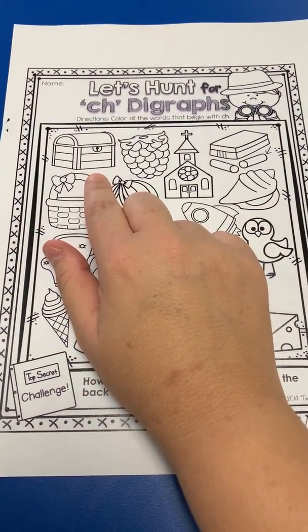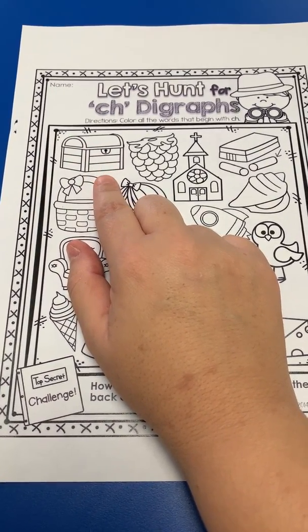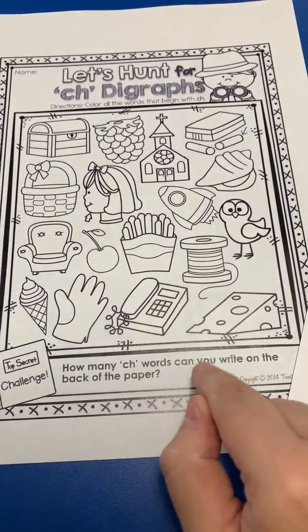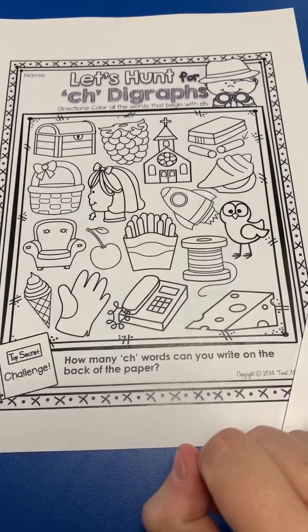This item might be a chest. So if you think it starts with a ch, then you can color it in and continue on with the pictures. Only color in the ones that you think start with the ch digraph.